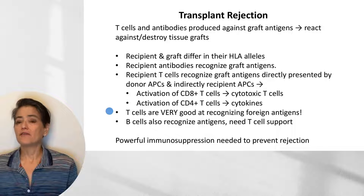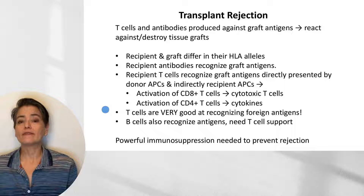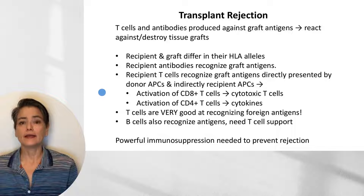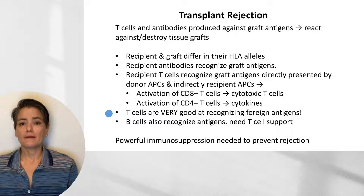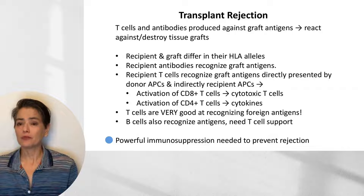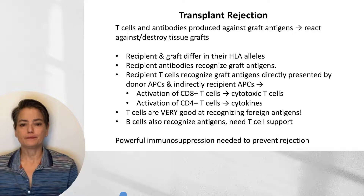T cells are very good at recognizing foreign antigens, and even better at recognizing them in implanted tissue — even better than what is seen with pathogens. Because of this B and T cell response, we are going to need powerful immunosuppression to prevent rejection.